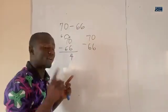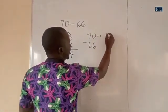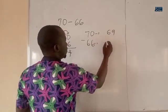Now, what you are going to do is, in order not to borrow, what you do is you subtract 1 here. This becomes 69. Subtract 1 here. This becomes 65.